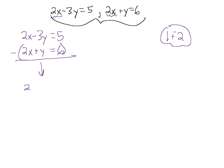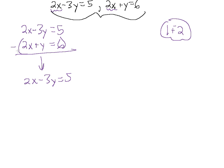We'll rewrite the first equation as 2x minus 3y equals 5, and then distribute this minus sign into the second equation — into the parentheses. So instead of subtracting the equation, we're going to add the opposite. Distributing the minus sign gives us minus 2x, minus y, and minus 6.